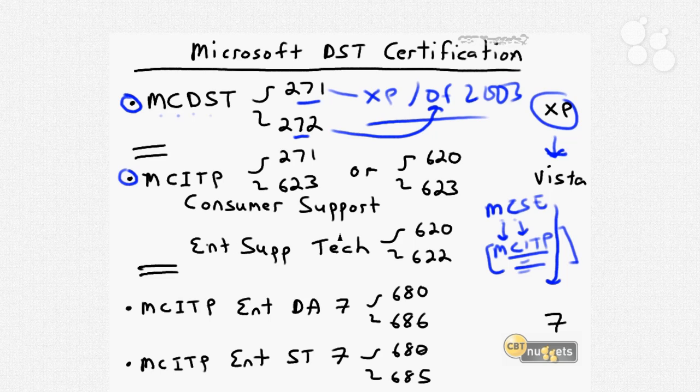In terms of desktop support, at the Vista level, there were two flavors of the ITP. There's consumer support and enterprise support technician. You can do 271, which is an upgrade path. Assuming that you're already a DST, you can become an MCITP consumer support in Vista by passing just a single Vista exam, 623. If you're going to go for the title from scratch, you would do two Vista support exams, 620 and 623. The enterprise support technician also requires the 620 Vista exam and requires 622, a pro-level test.